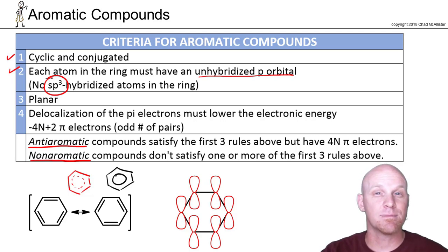So one of the keys here is that there are no sp3 hybridized atoms allowed in the ring. If they're sp3 hybridized, that means they don't have one of these unhybridized p orbitals. They've used all their p's in the hybrid. So another way to look at rule number two is instead of saying each atom in the ring has to have an unhybridized p orbital, you might just say there's no sp3 hybridized atoms allowed in the ring.